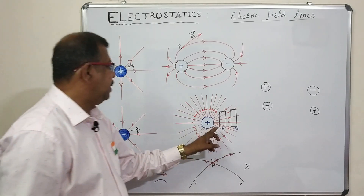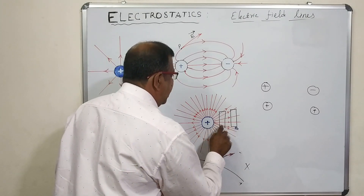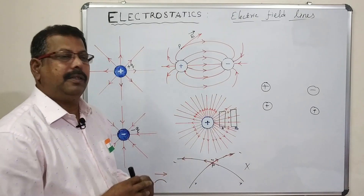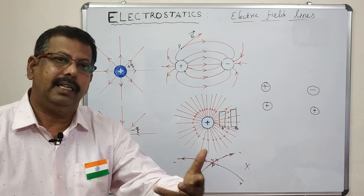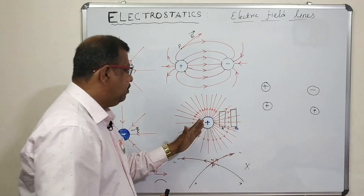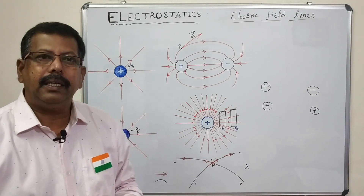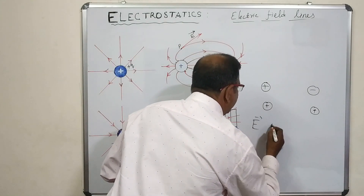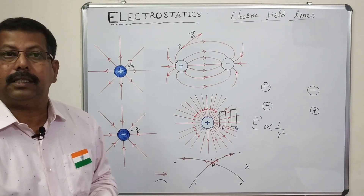Now, consider point A closer to the positive charge and point B farther away. The electric field intensity is greater at area A because it is at a smaller distance from the positive charge, whereas area B has less electric field strength because it is at a larger distance. Electric field is inversely proportional to distance squared — as distance increases, electric field strength decreases.